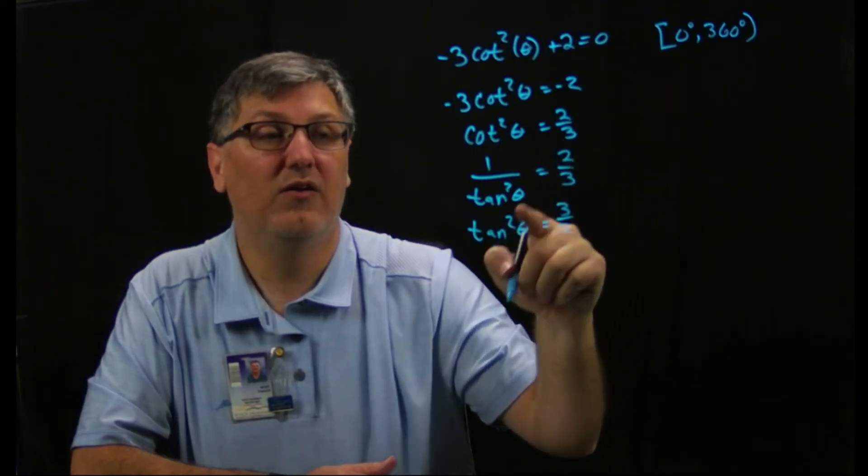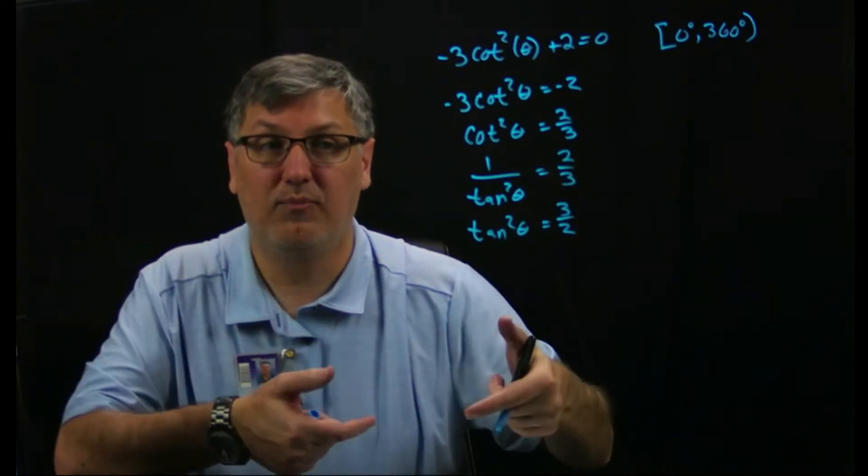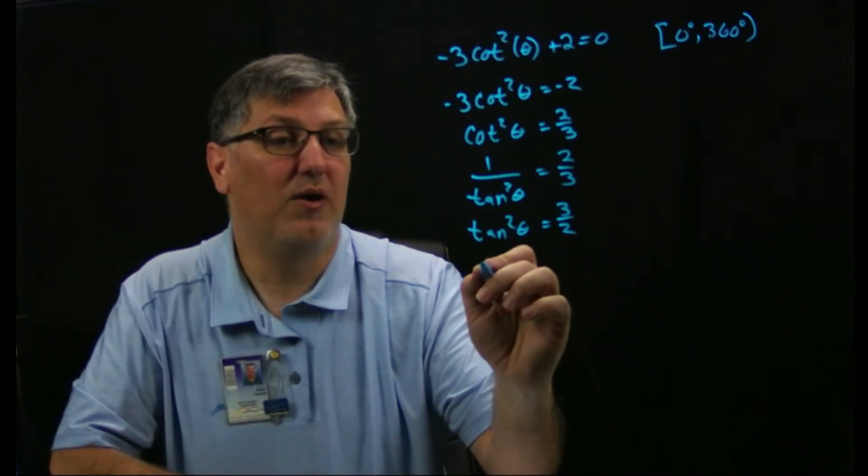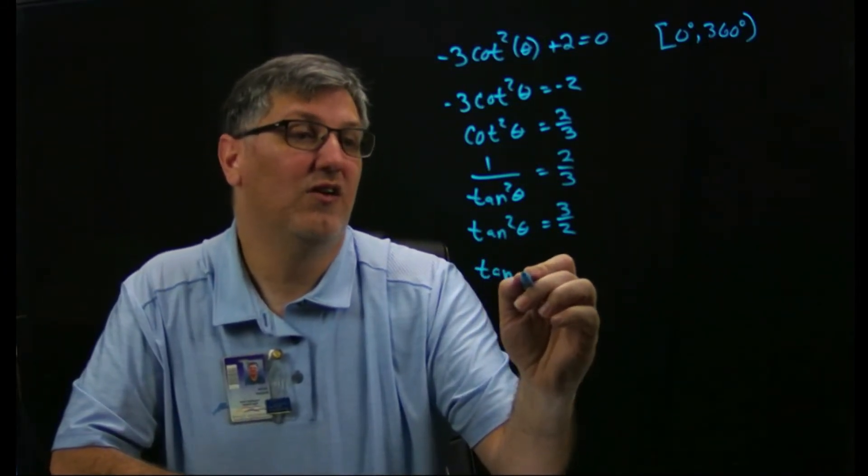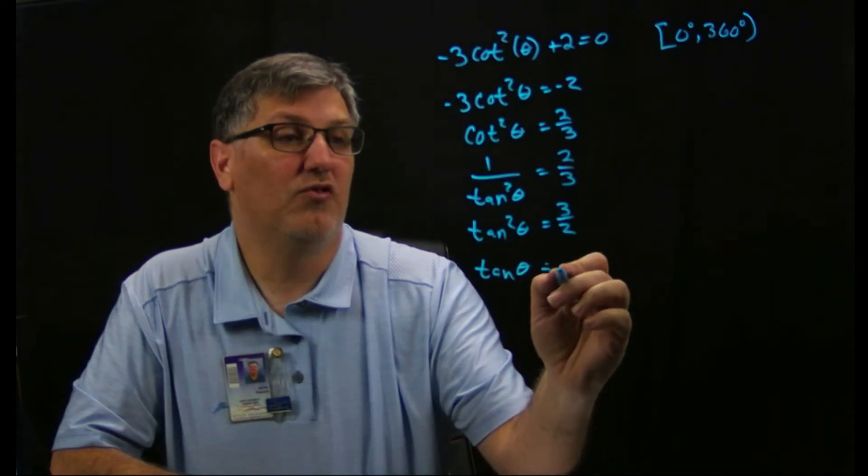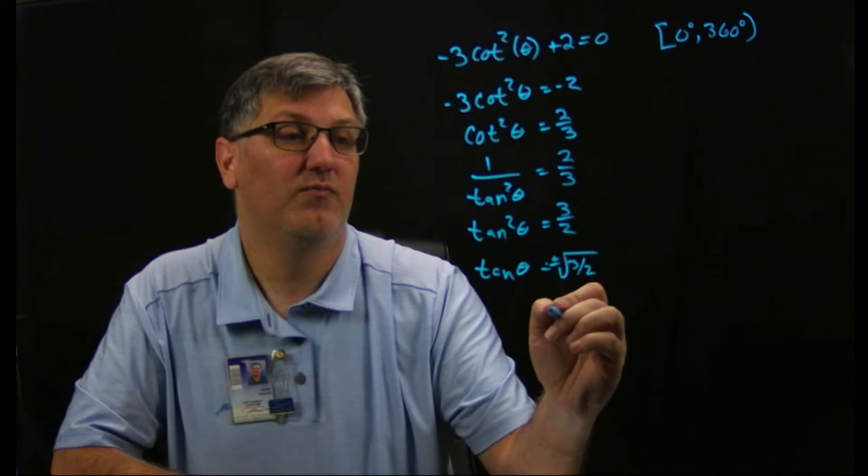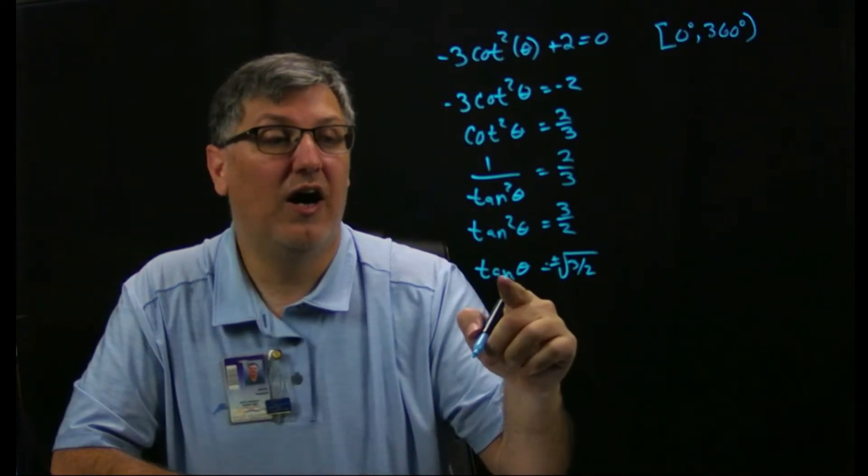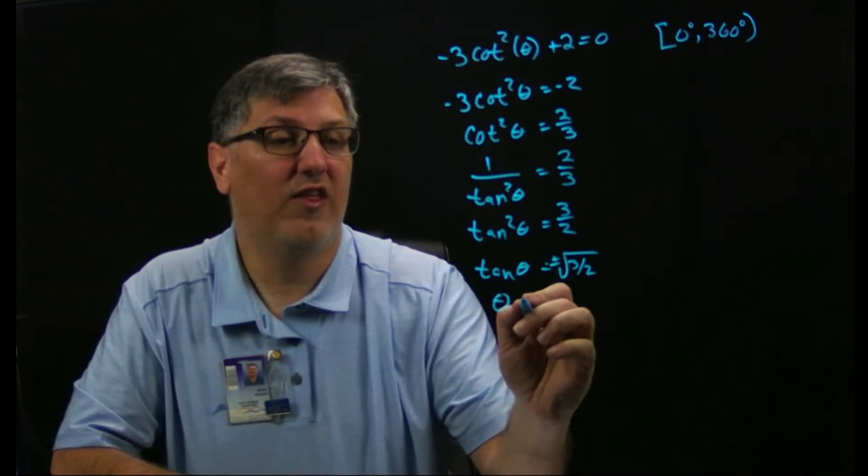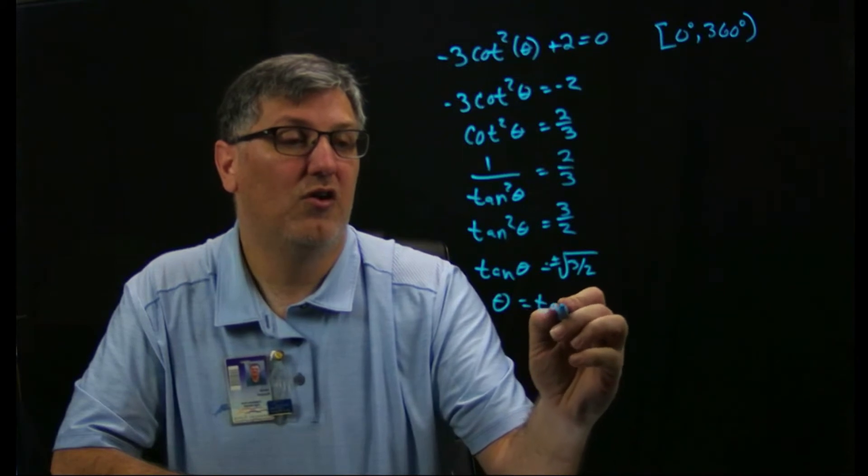Well if you think of cotangent as x over y, right, that means tangent would have to be y over x. We just flipped it. So now I can take my plus or minus and I've got tangent theta equals the square root plus or minus of 3 divided by 2. And then from here I take my arc and I get theta equals arc tangent of the square root of 3 over 2.